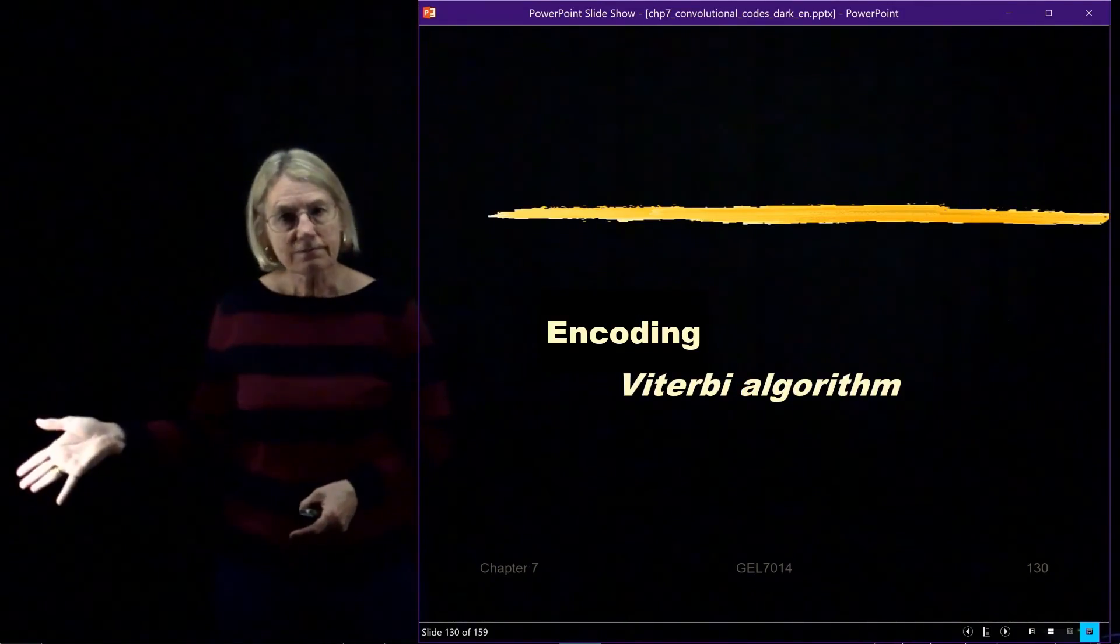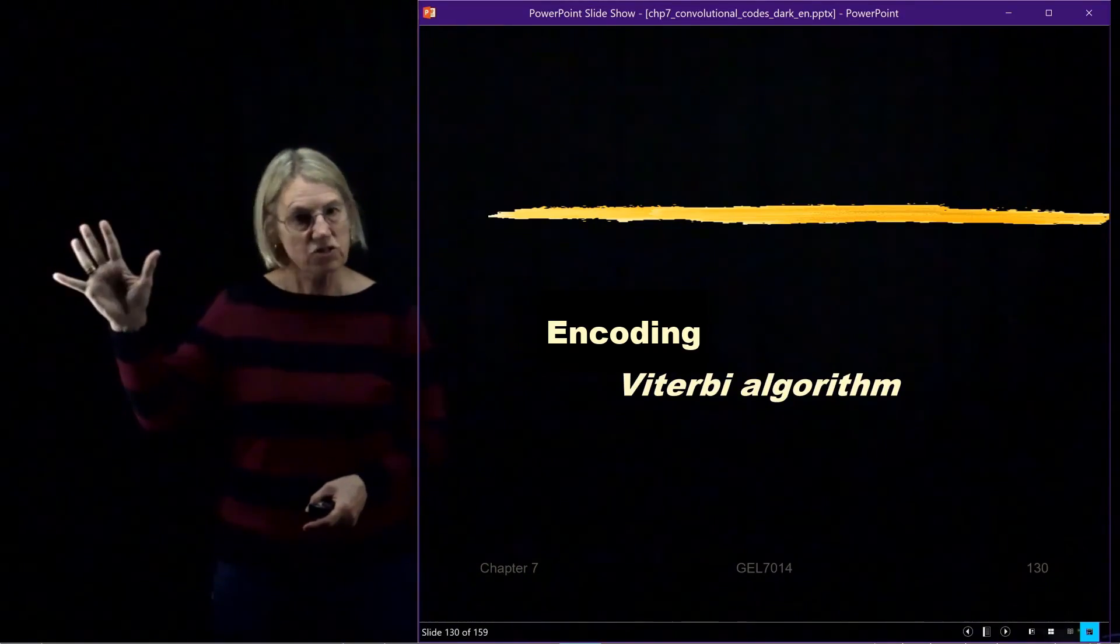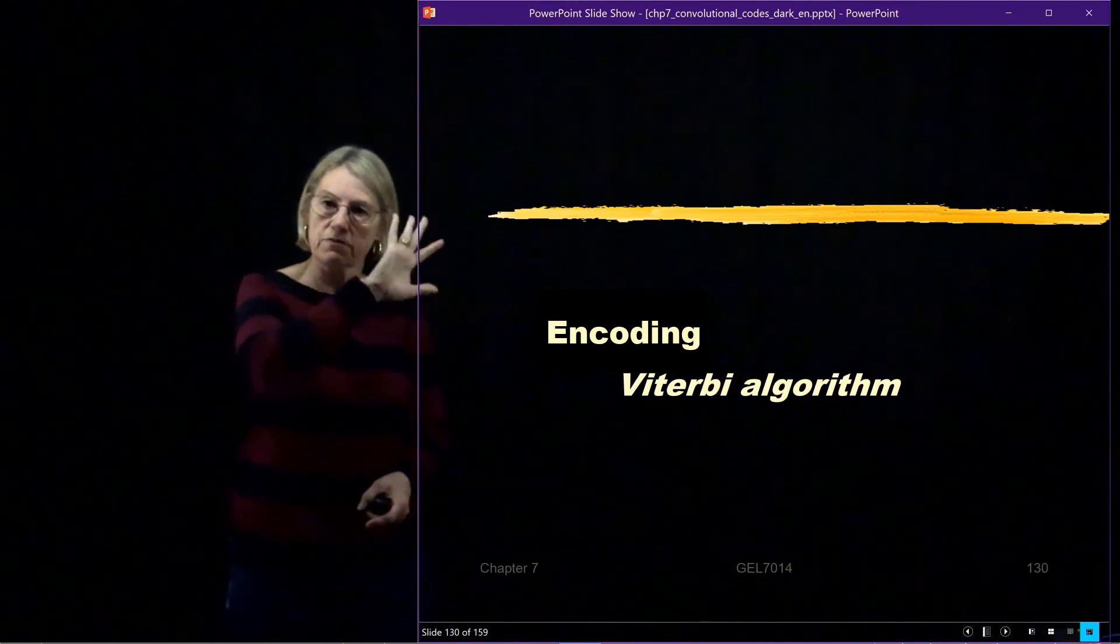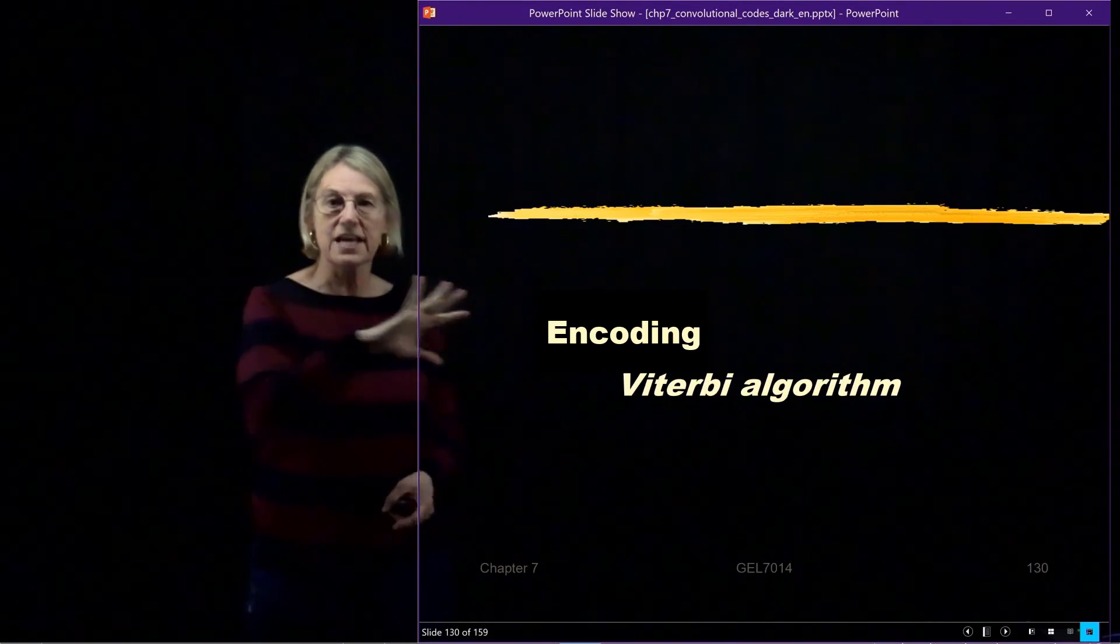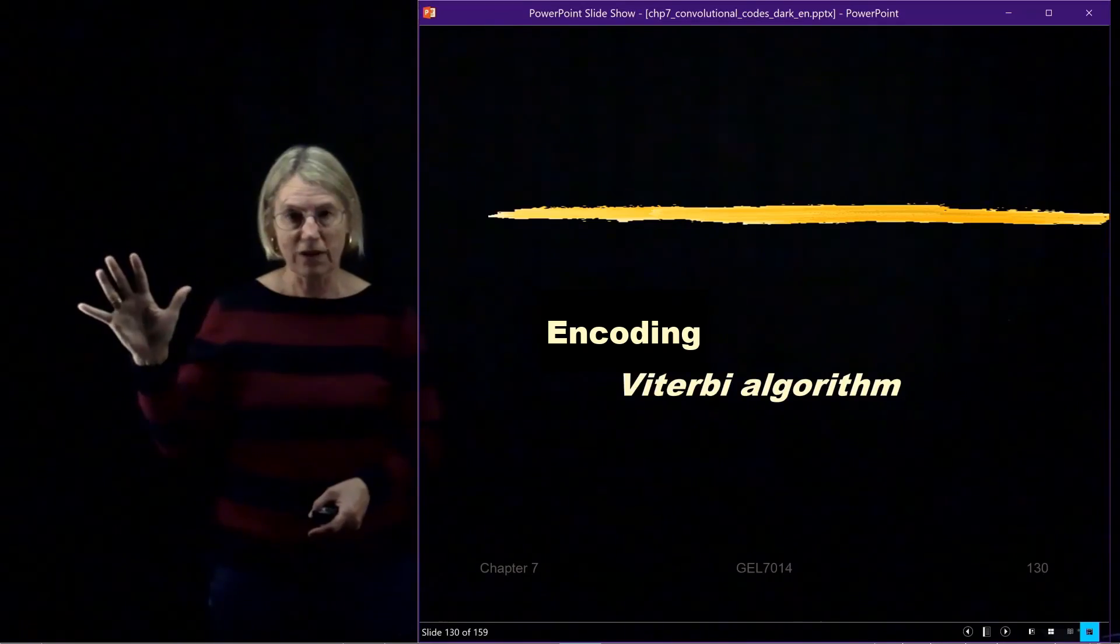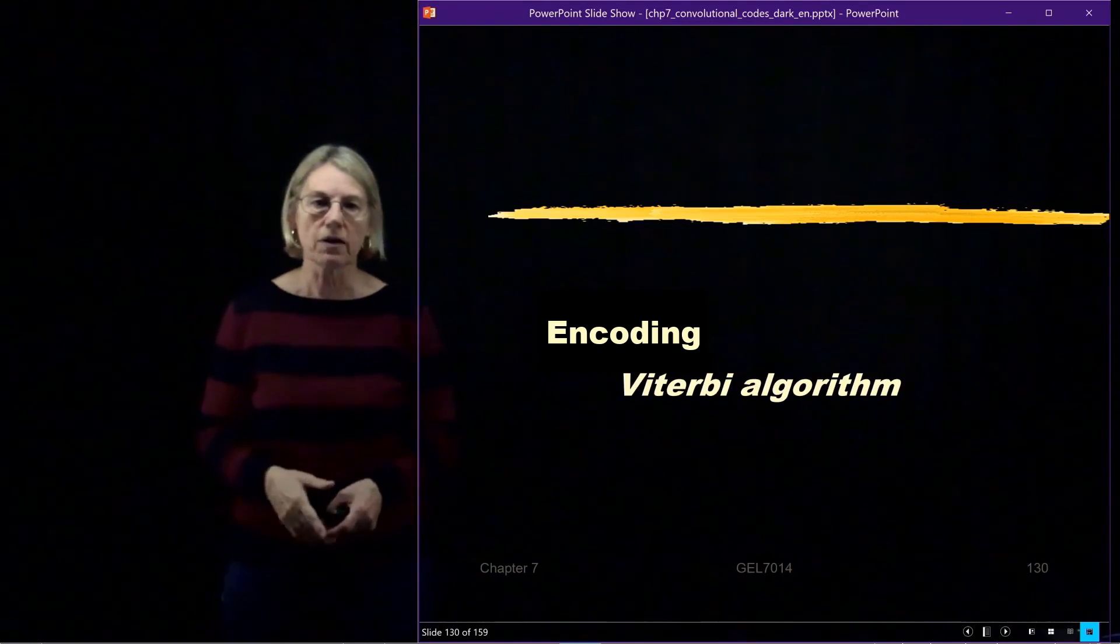So that's the encoder. How to build an encoder. How to start from the shift register implementation. Or you could have started from the vector representation or a hexadecimal representation. Built your own register and gone through the encoding. Different kinds of questions I could ask about the encoding process.